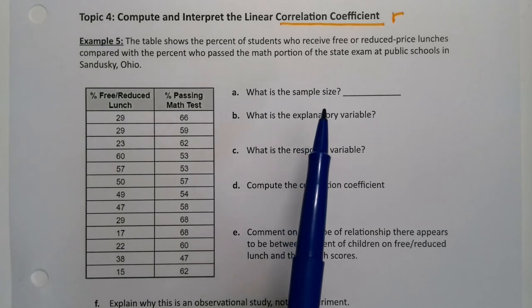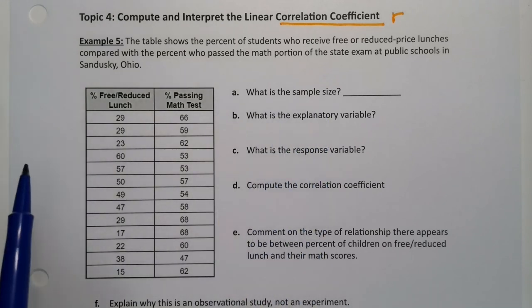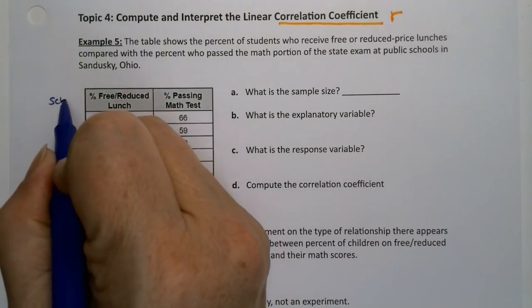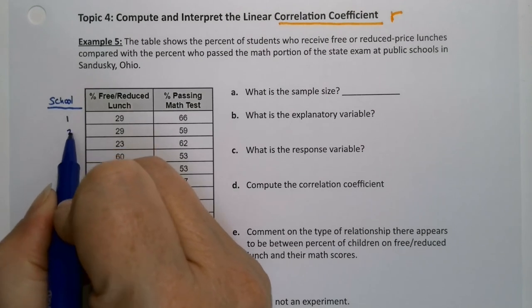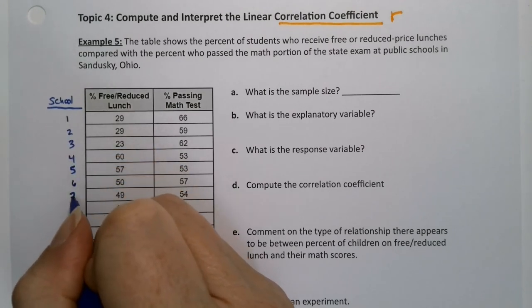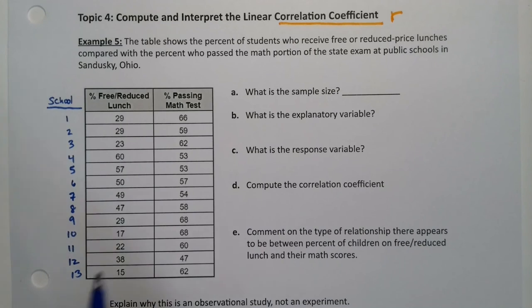What is the sample size? Remember the sample is the schools. The schools themselves are that sample. So if I put over here school, we have school number one, school number two, three, four, five... there we go. So we have 13 schools total.